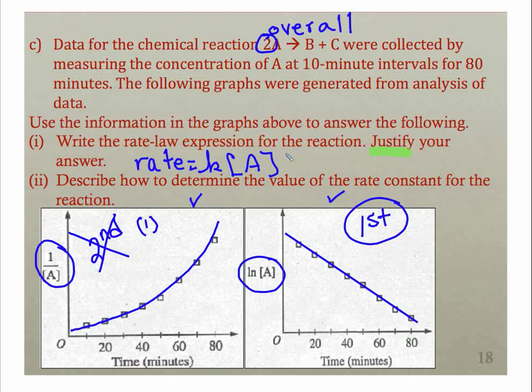You need to know that natural log of A versus time is a test for first order. And since it is a test for first order and it's a straight line, we can conclude that it is first order with respect to A. So you need two statements: that 1 over A versus time is not a straight line, therefore it is not second. Natural log of A versus time is a straight line, therefore we can conclude that it is a first order reaction.